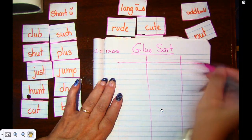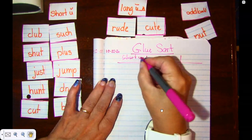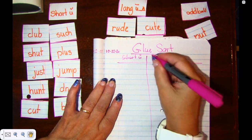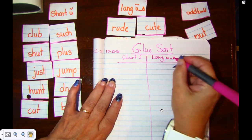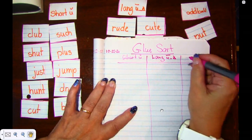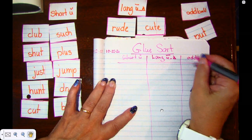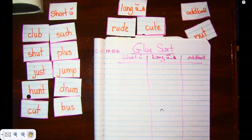I'm going to draw it across. I'm going to write my short U with the hook on top. My long U with a consonant and a silent E, and it gets a long line and the silent E is crossed out. And my oddball. Now that I have my headers written down, I can put my pen away and I can go ahead and get out my handy dandy glue stick.